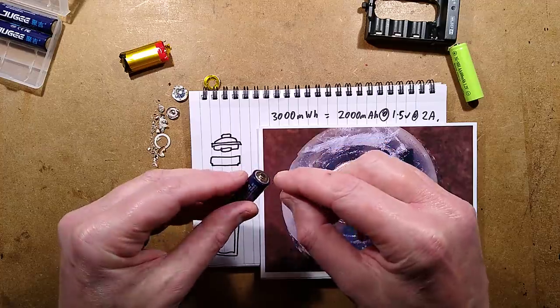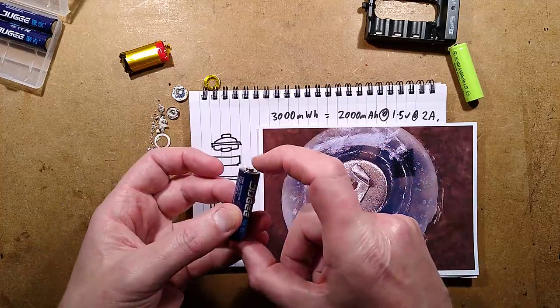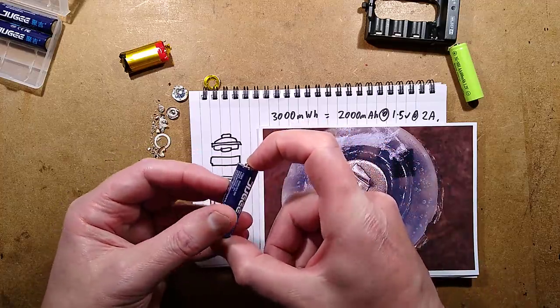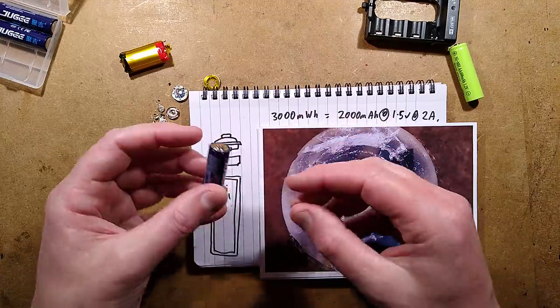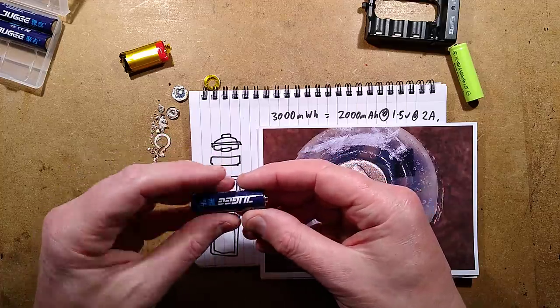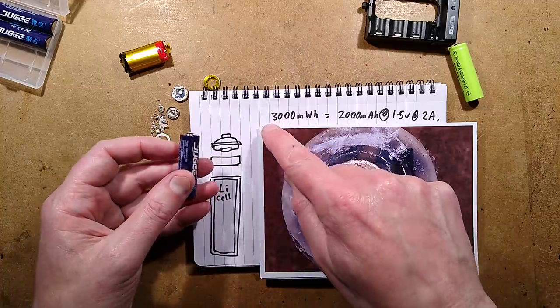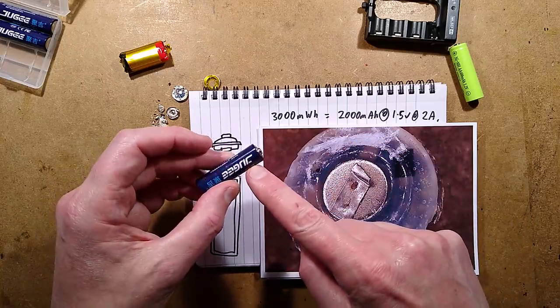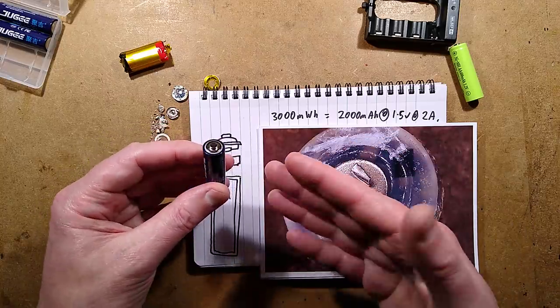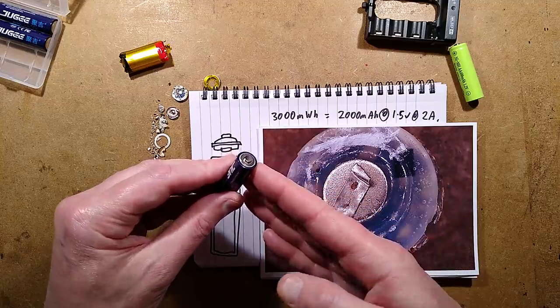They put out a steady 1.5 volts for the full duration of the discharge until it gets to the end, when it detects the lithium battery is low and then it drops down to one volt to signal to equipment that the battery is running out. It has a 3000 milliwatt hour capacity, can put out the equivalent of 2000 milliamp hours at 1.5 volts, and has a peak current of about 2 amps.